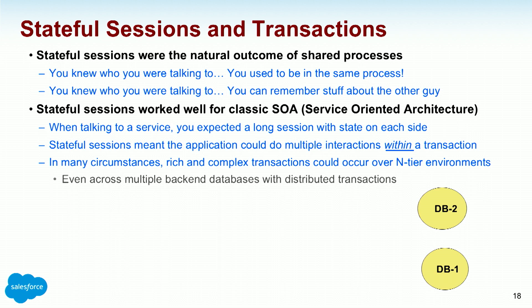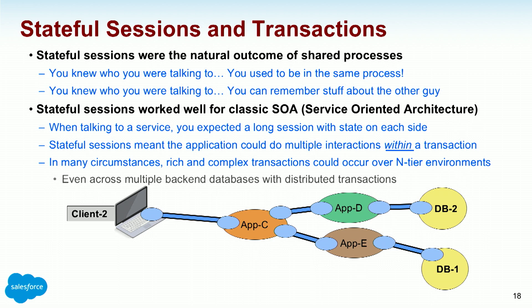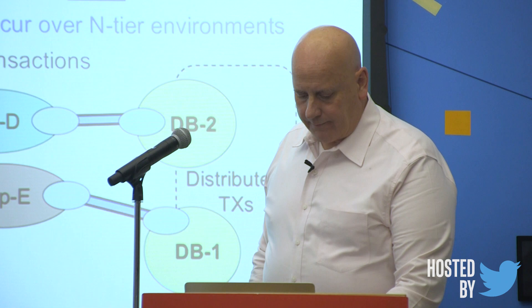Here I have database one and database two. Client one talking to app A, which talks to app B, which talks to database one. Client two talks to app C, which talks to app D, back to those two databases. For cross-database transactions, you needed distributed transactions — Microsoft Transaction Server did this. The propagation of transaction state across sessions across N-tiers was cool and new in the mid-90s — I was very proud of it. But it's worked out to be more brittle than I wish, because when things break it gets locked up.